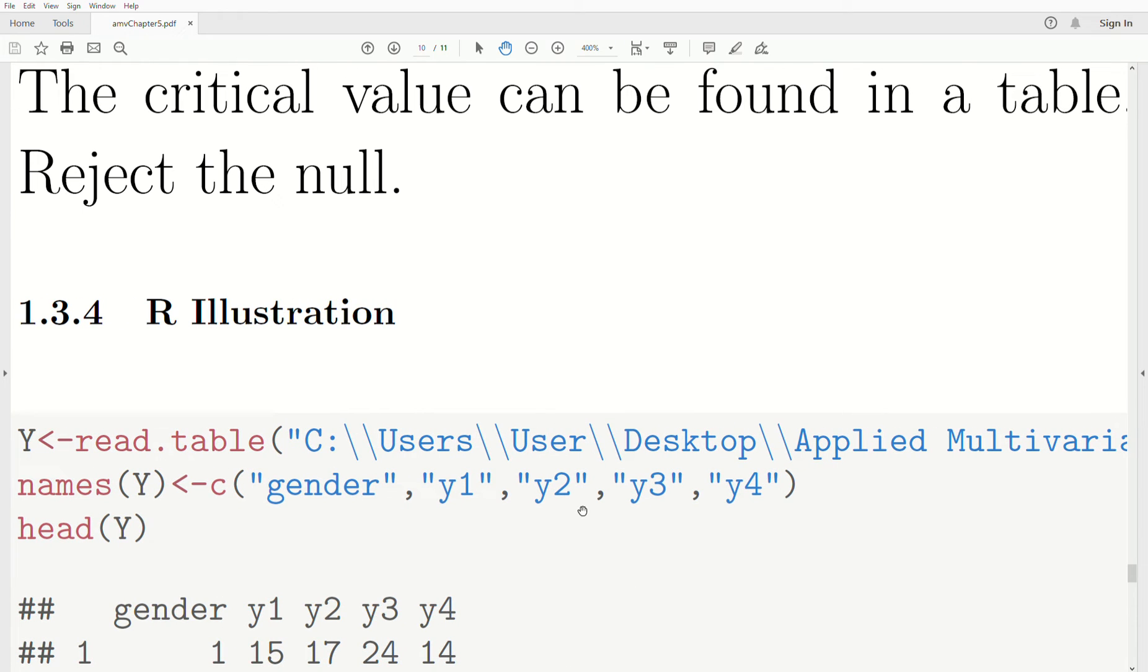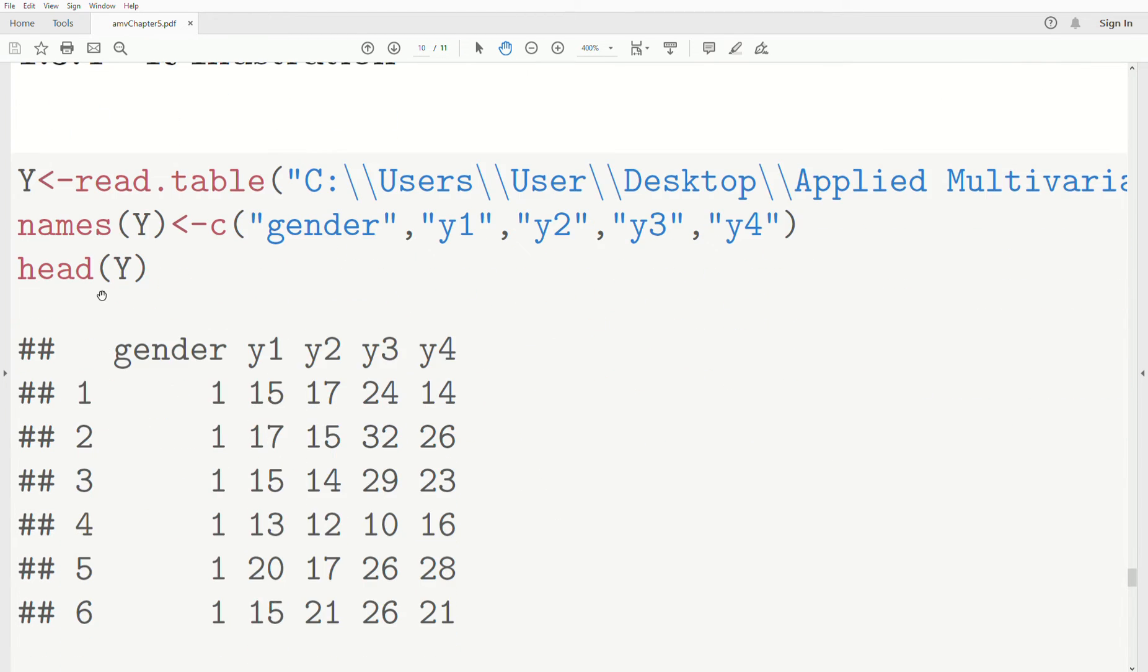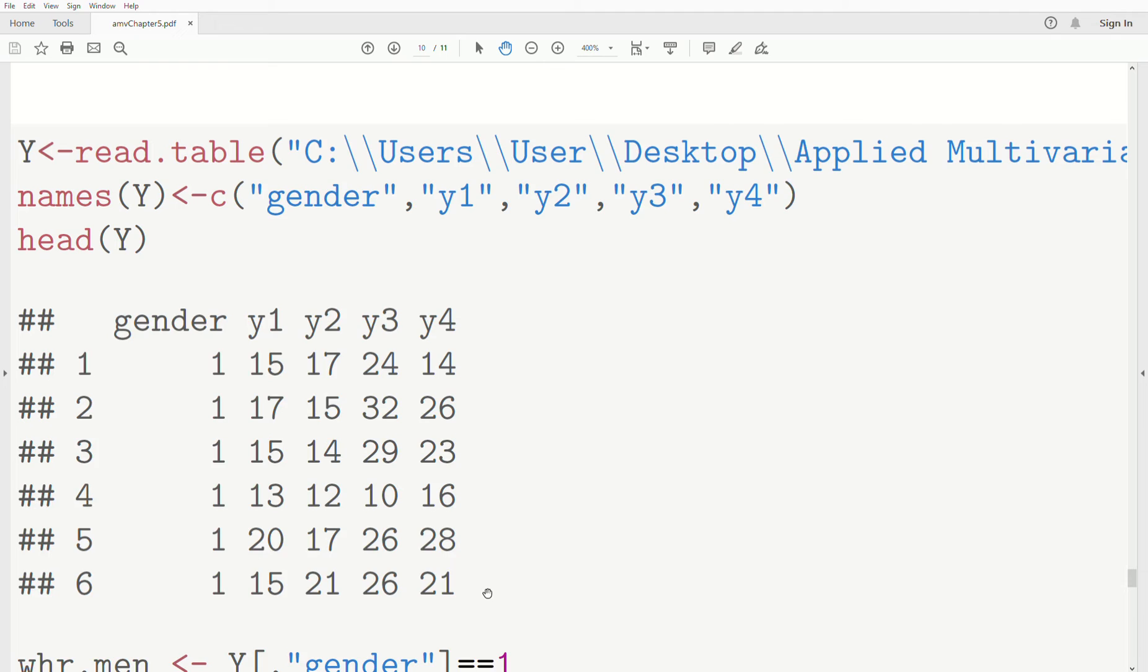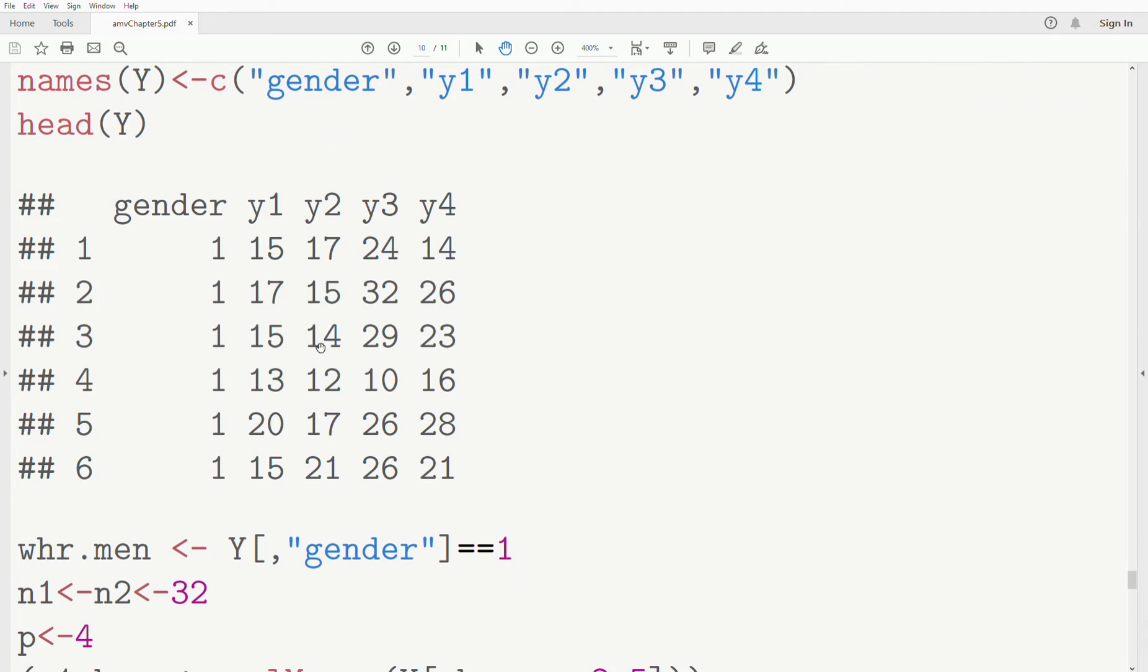There's no header in this data file. So I provide names: gender, Y1, Y2, Y3, Y4. If we look at the head of Y, which prints the first six rows, you get this. The gender consists of ones and twos. Somehow we have to create an indicator function that we can separate those out.